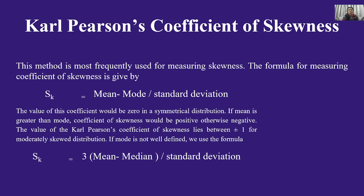We have studied positive and negative skewness. If the mode is not well defined, we use an alternate formula: Skewness = 3(Mean − Median) / Standard Deviation. So if mode is known, use Mean minus Mode divided by SD; if mode is not known, use the median-based formula multiplied by 3. Formulae-based numericals and MCQ-based questions can be asked in competitive examinations.